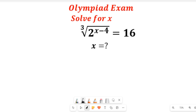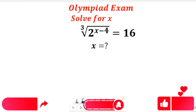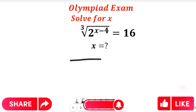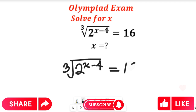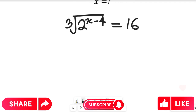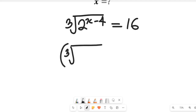Now let's get started. To solve this question, the first thing we think of doing is to take the cube of both sides. We are already given the cube root of 2 to the power of x minus 4, equal to 16. We take the cube of both sides to clear the cube root, giving us 2 to the power of x minus 4.